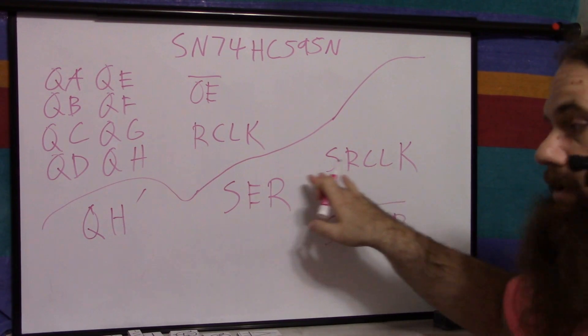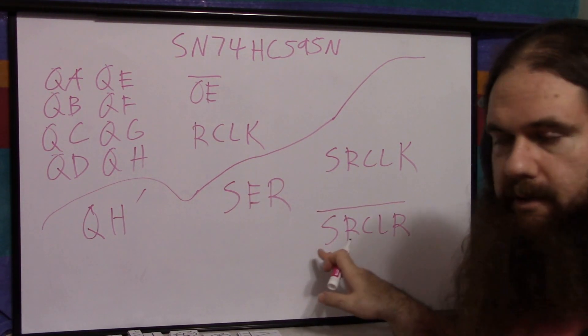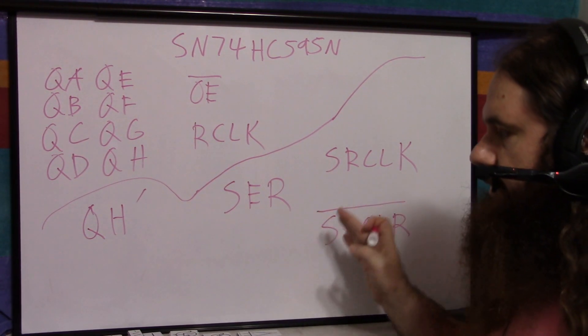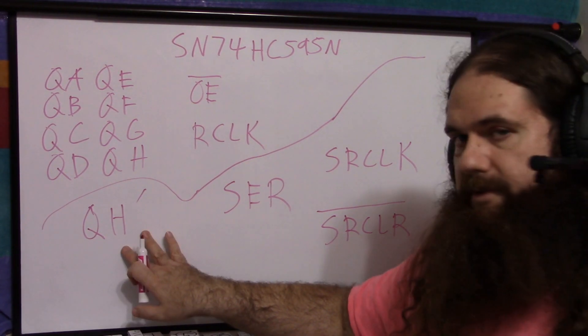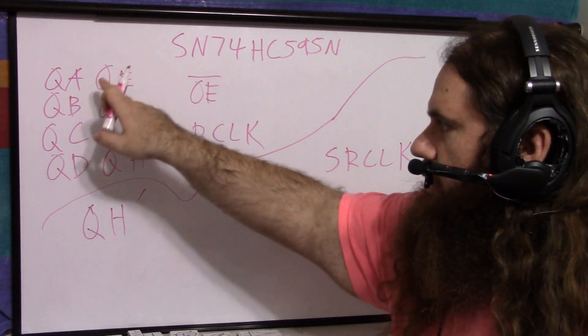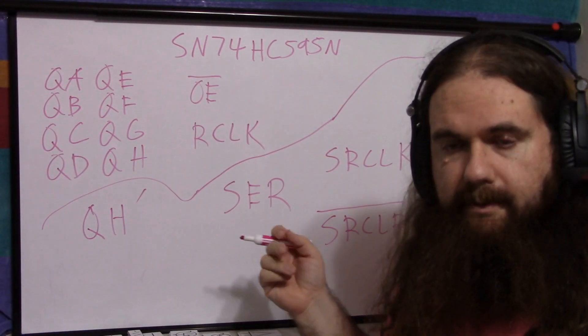So the serial data input, the serial clock to shift in the serial data input, the serial clear, active low to clear it as if you had just shifted in eight lows, but it's asynchronous. It'll clear at any time. And then the bit that would be shifted out. And then the output and the output clock, and these are the synchronous data part. So two registers in one. Pretty cool.